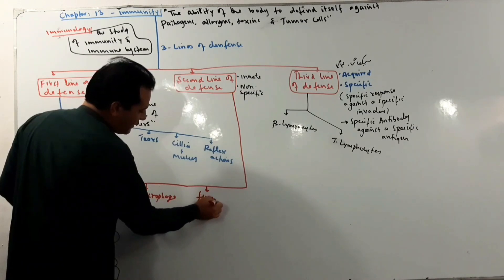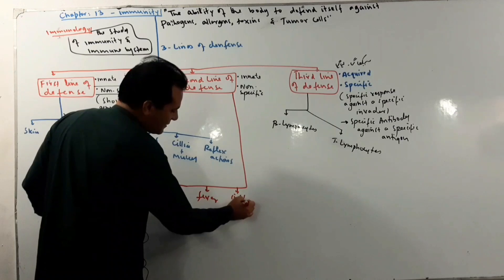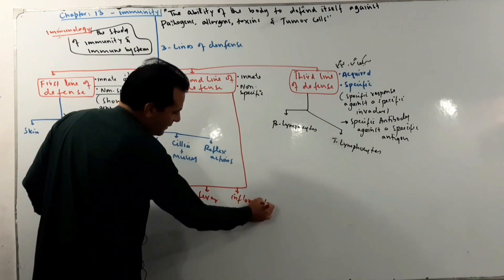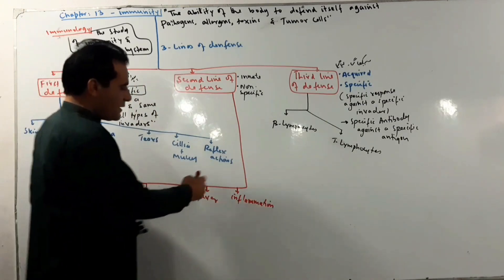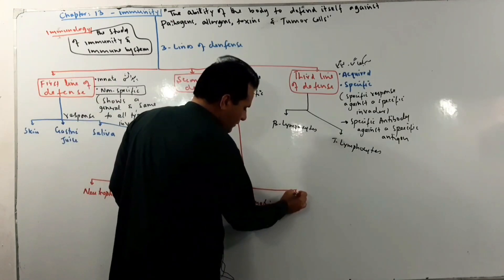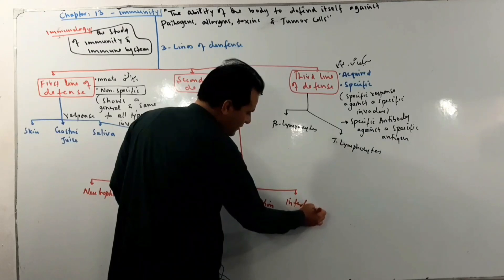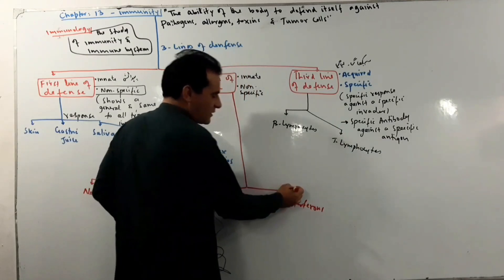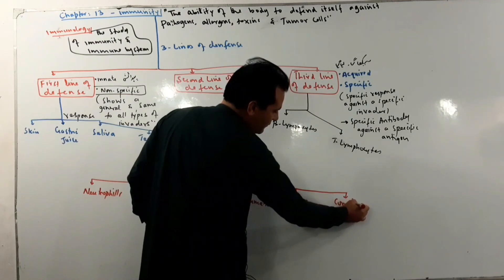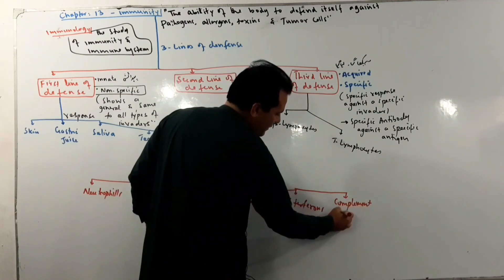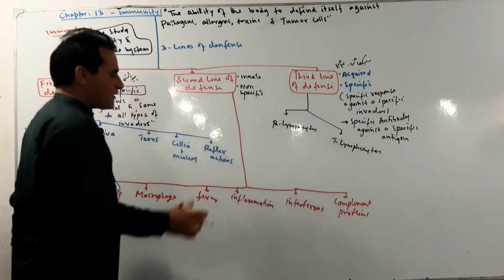The third component of the second line of defense is fever. Number four is inflammation. Inflammation is part of the second line of defense. There is also interference, which is part of the second line of defense. And the other component is the complement system, with complement proteins.